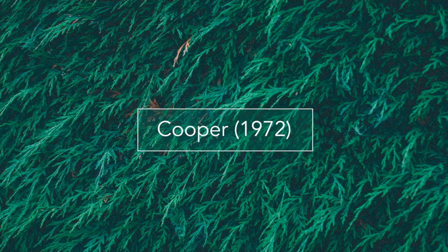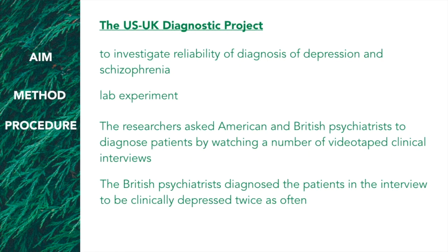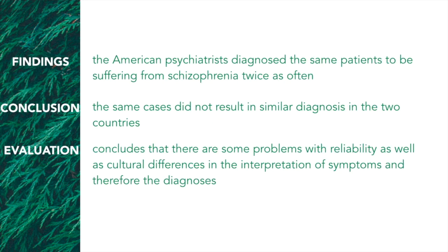The second study supports the idea of unreliability in diagnoses. Cooper et al. 1972, also called the US-UK Diagnostic Process Project, aimed to investigate the reliability of diagnosis of depression and schizophrenia. Researchers asked American and British psychiatrists to diagnose patients by watching videotaped clinical interviews. British psychiatrists diagnosed the patients to be clinically depressed twice as often, while American psychiatrists diagnosed the same patients to be suffering from schizophrenia twice as often. In conclusion, the same cases did not result in similar diagnoses in the two countries, highlighting problems with reliability as well as cultural differences in the interpretation of symptoms.